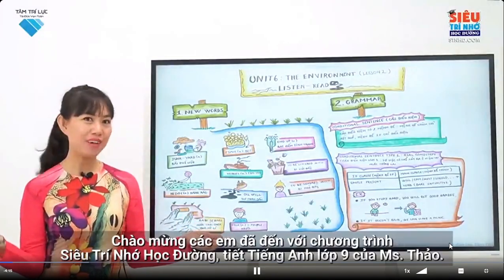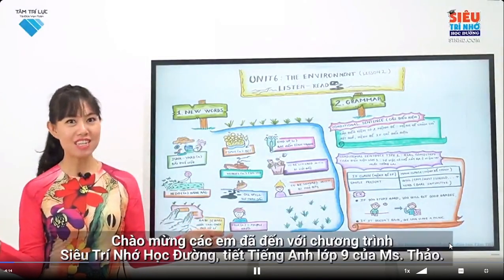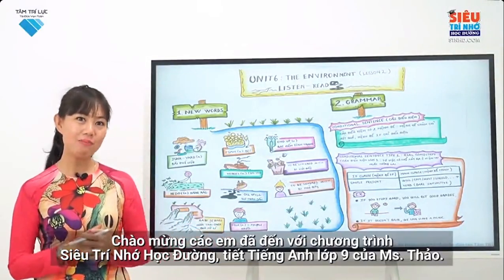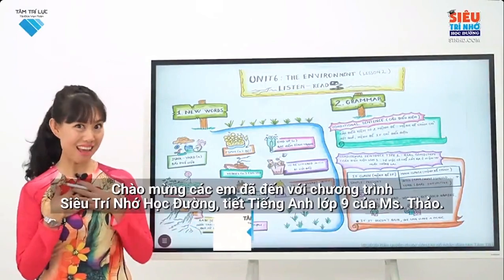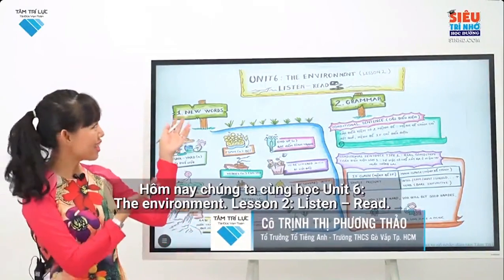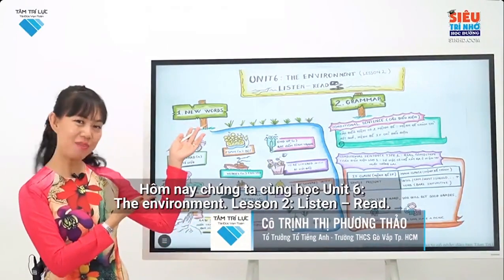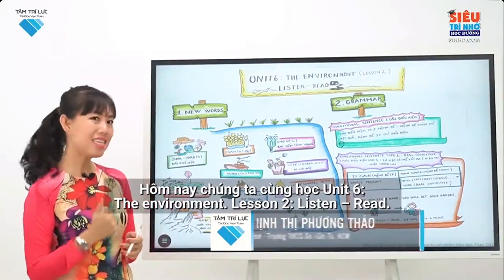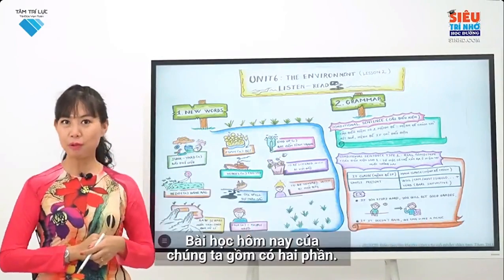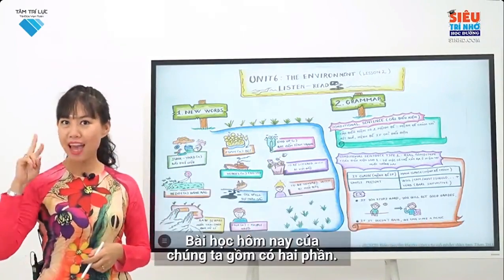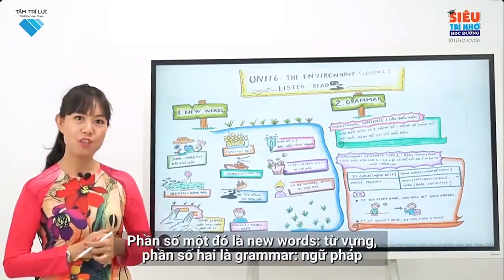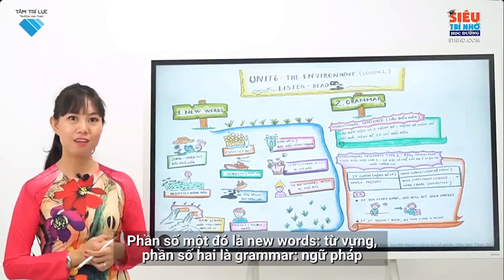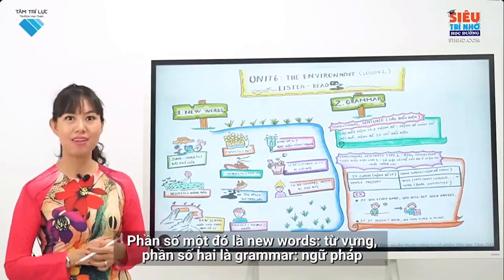Hello, everyone. Welcome to the Super Memory for Schools program, 9th grade English lesson of Ms. Tao. Today we will learn Unit 6, The Environment, Lesson 2, Listen and Read. Today's lesson includes two parts: Part number one is new words, and Part number two is grammar.